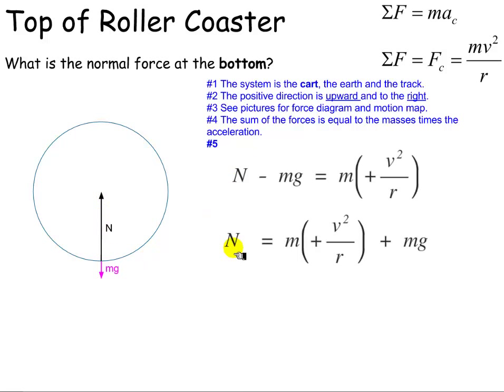So now the normal force is this value here, mg, plus whatever the net force was. Well, so the net force, which was this value here, is a normal force minus this force due to gravity. That would be the total net force.